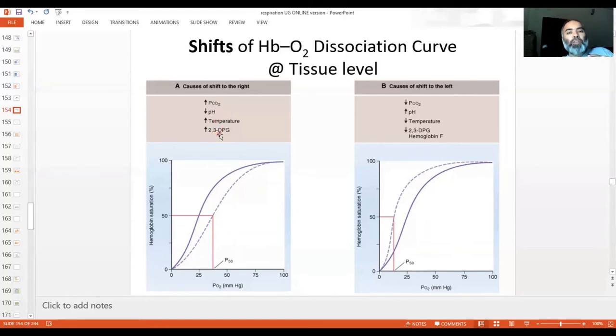So all of these three conditions written here can be remembered if you remember a metabolically active tissue. And 2,3-DPG is within the blood. So all of these factors - please remember this - these four factors, they push the curve rightward or downwards as soon as the blood enters into the tissue.